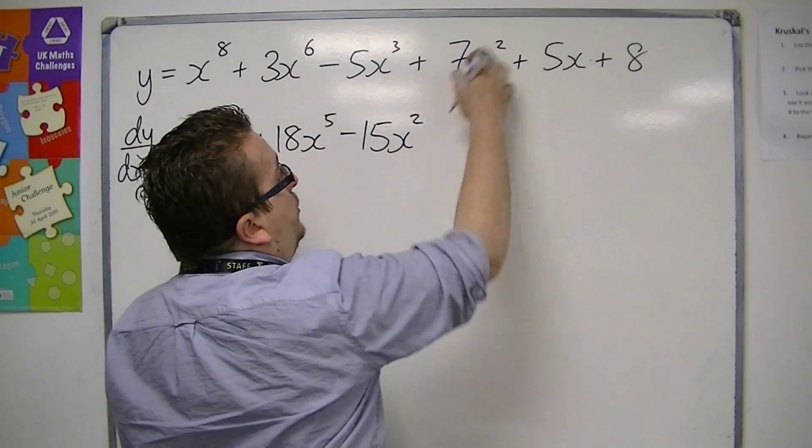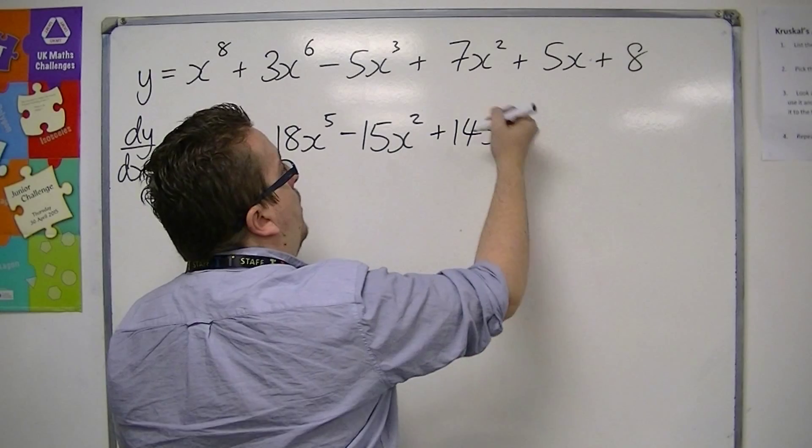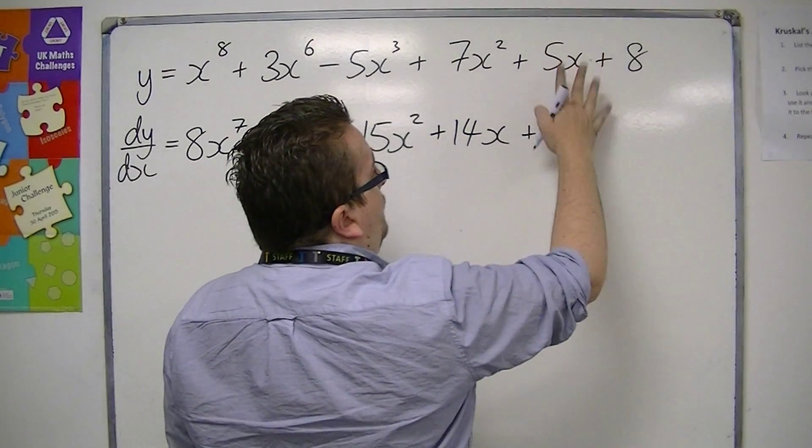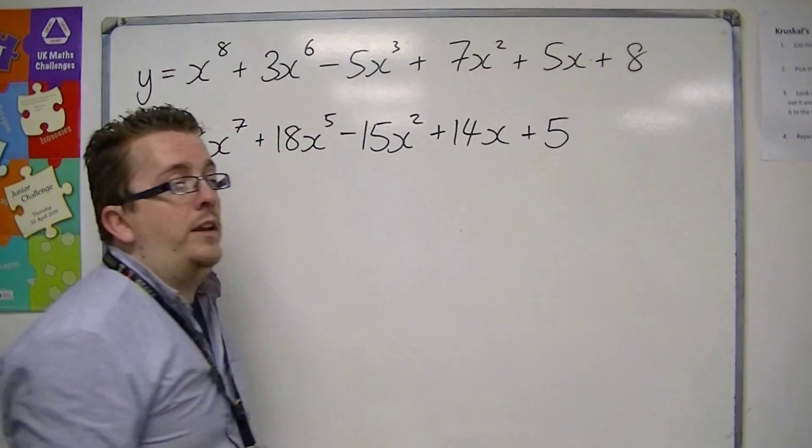For the fourth term, the 2 comes down to the front, multiplies with the 7 to make 14, and 1 comes off the power. 5x differentiates just to 5, and the 8 differentiates to 0.